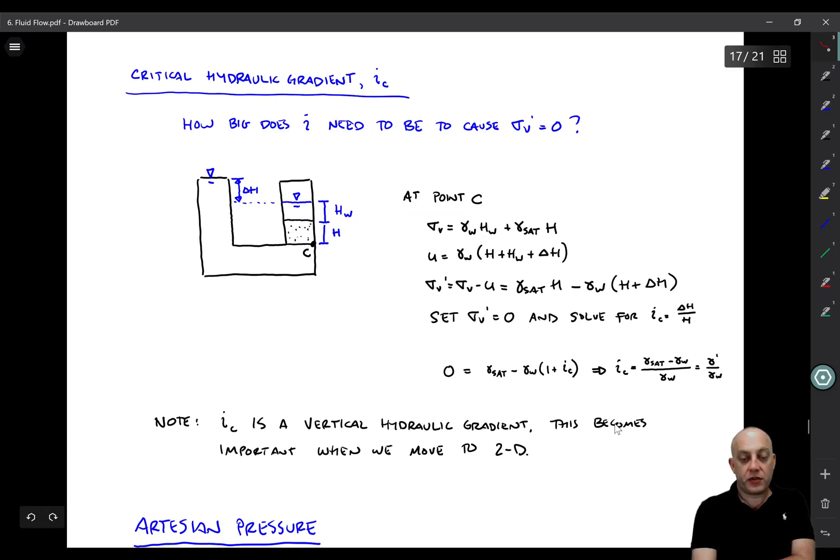So at point C, the vertical total stress is equal to gamma W times HW. Remember, we always have to integrate downward from the very top surface, either a water-air interface or a soil-air interface. So we have to include that water. So sigma V is gamma W HW plus gamma saturated times H. The soil is below the water table, it's going to be saturated. Then the pore pressure at point C - the total stress was controlled by all this stuff happening above it. The pore pressure is controlled by that water surface over there. So it's equal to gamma W times H plus HW plus this delta H. That's the height between point C and the controlling water surface. So sigma V prime is simply sigma V minus U. And you end up getting gamma sat H minus gamma W times H plus delta H. So this HW term actually goes away. It cancels out when you do the subtraction.